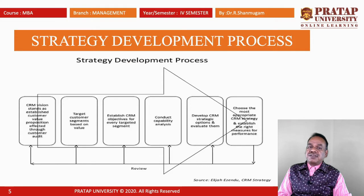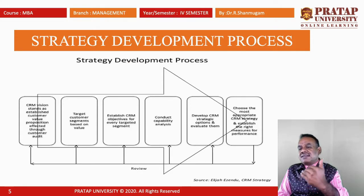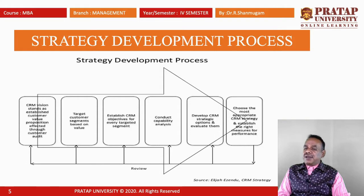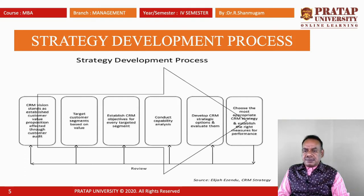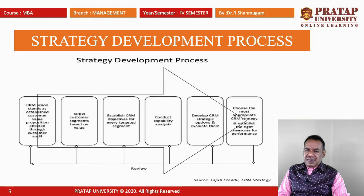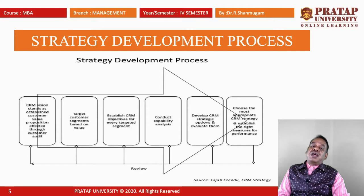The strategy development process begins with establishing a CRM vision and customer value proposition, then conducting a customer audit leading to target customer segments based on value — for example, luxurious cars targeting business magnates or celebrities. Next, CRM objectives are established for every targeted segment, whether high-range, low-range, or middle-range. A capability analysis is then conducted, followed by developing and evaluating CRM strategic options to choose the most appropriate strategy and establish right performance measures.